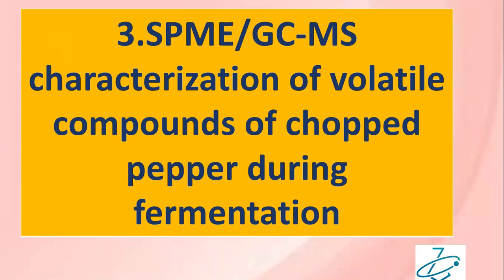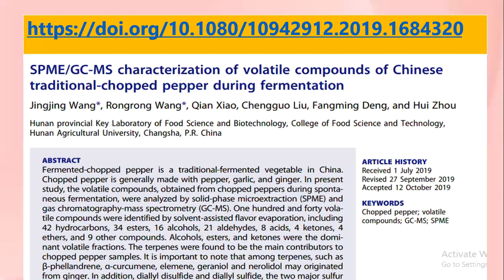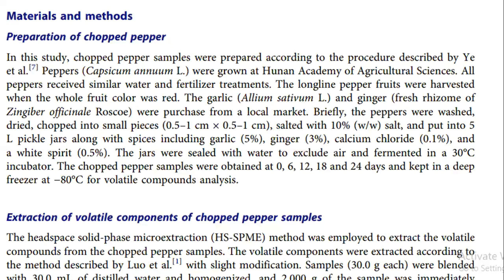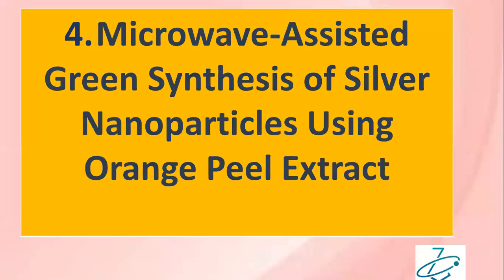This involves GC-MS characterization of volatile compounds of chopped pepper during fermentation. First, you have to check the materials and methods from the research paper and make a decision based on the facilities available in your institution.